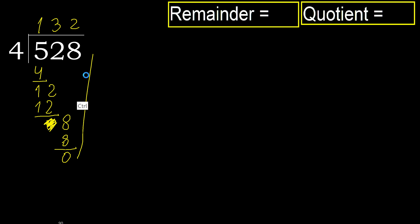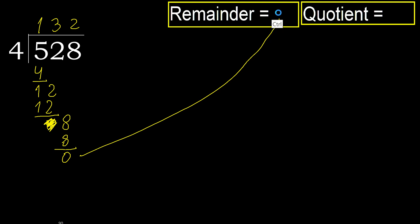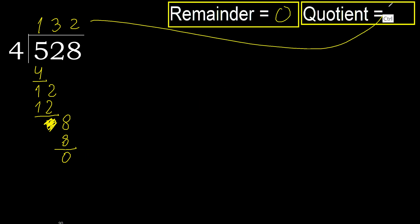Next, there is not a number, therefore finish it. 528 divided by 4 is 132.